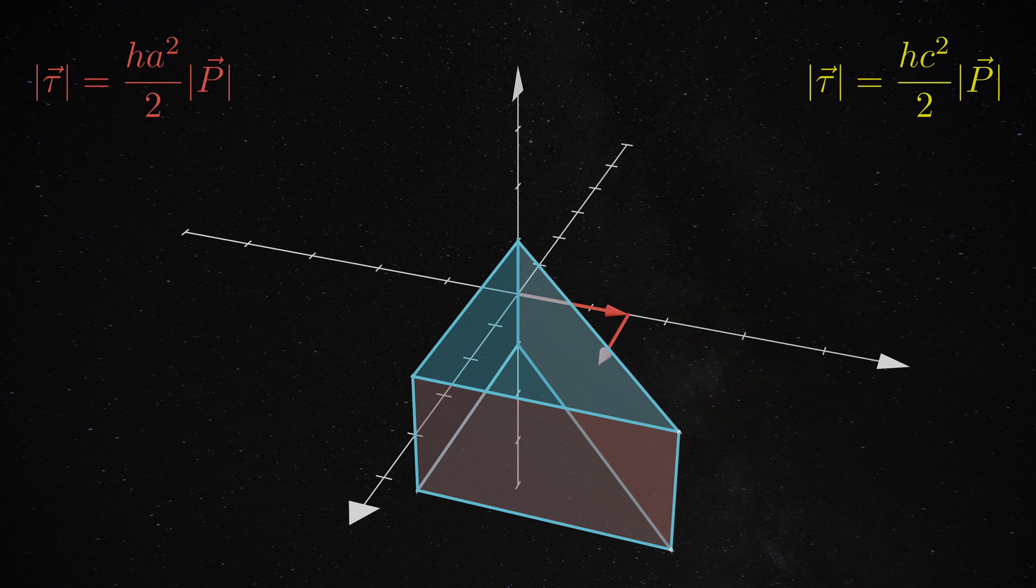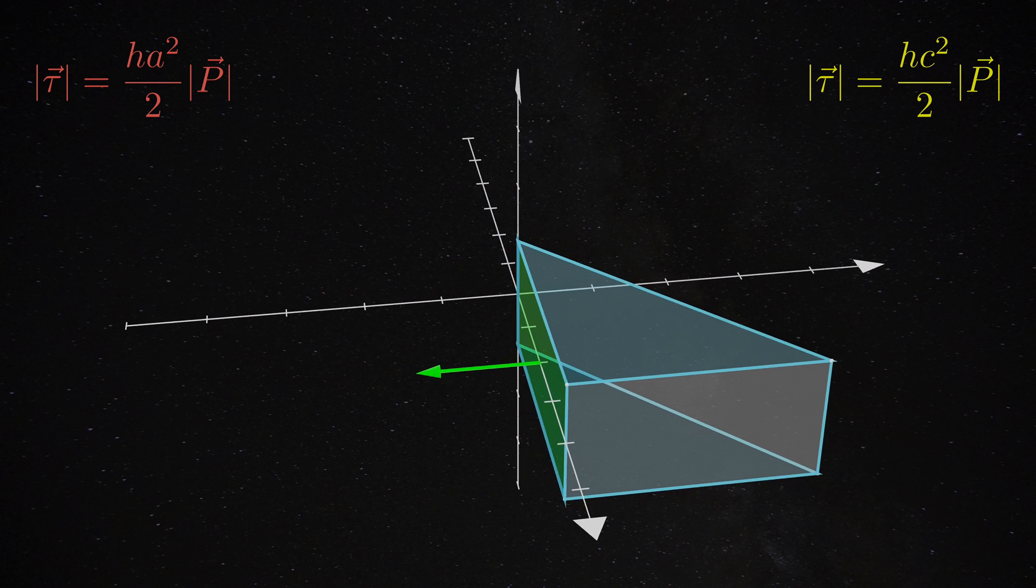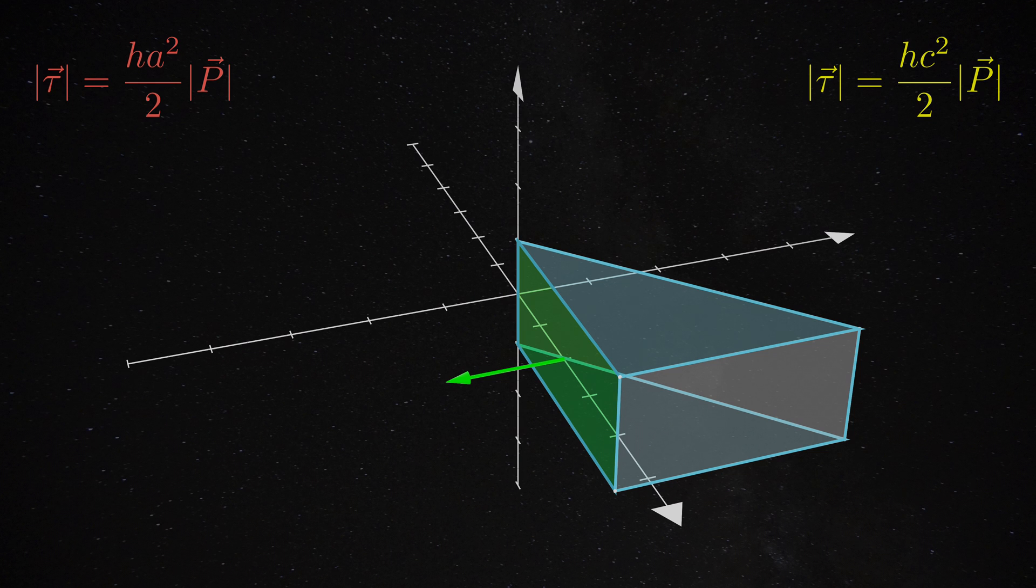The same calculation applies to our last surface. With a similar calculation, the torque is pointing downward with the magnitude of hB² over 2 times the magnitude of P.